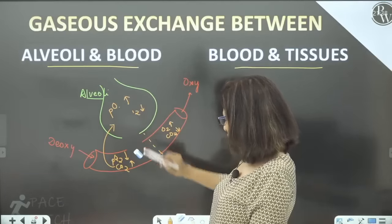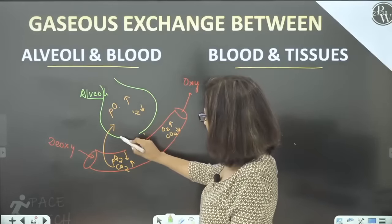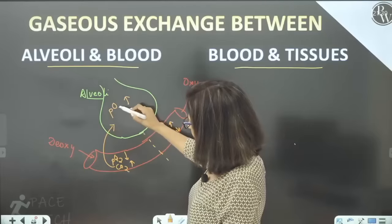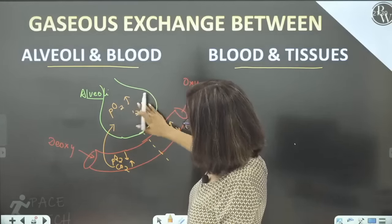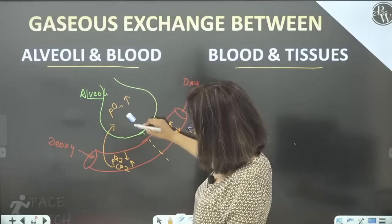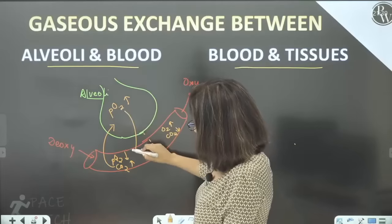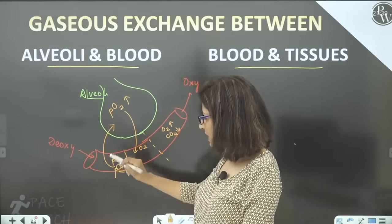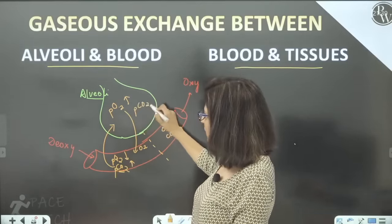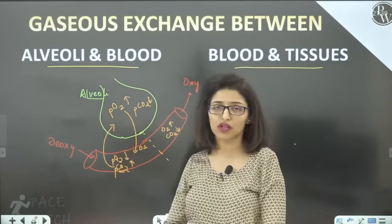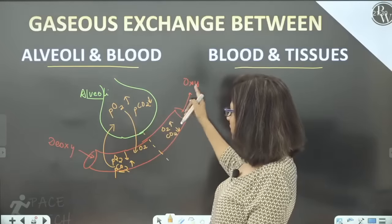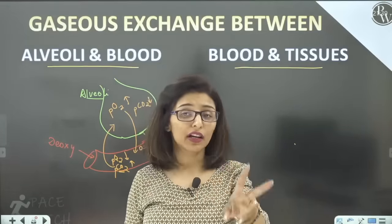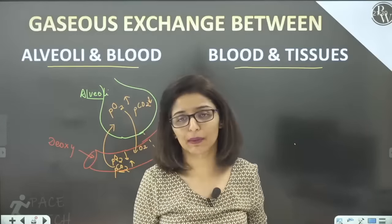To summarize the alveolar exchange: partial pressure of O₂ is higher in alveoli — O₂ moves from alveoli into blood. Partial pressure of CO₂ is higher in de-oxygenated blood — CO₂ moves from blood into alveoli. After exchange, the oxygenated blood has higher O₂ and lower CO₂ partial pressure. Carbon dioxide moves to low pressure independently, and oxygen moves to low pressure independently. Both gases check their own pressure gradients.